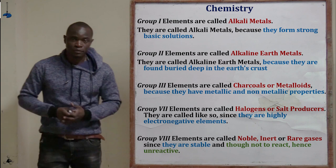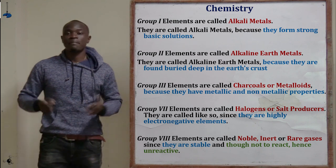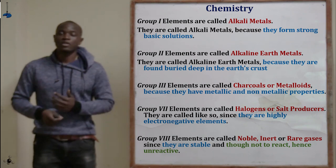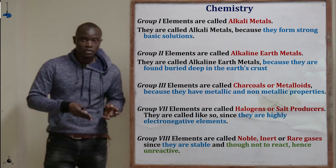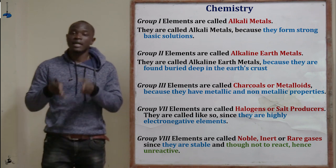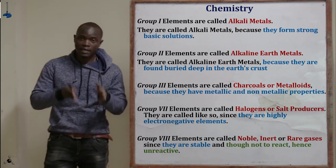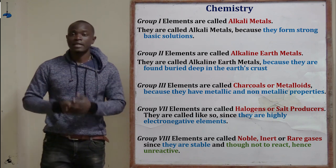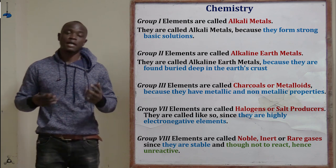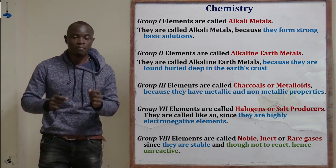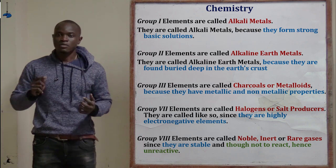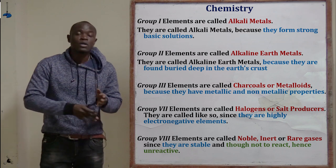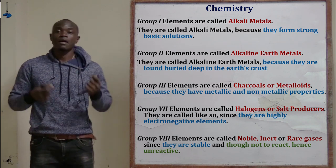Element K is in group 2. Group 2 elements are referred to as alkaline earth metals — not alkali earth metals. They are called alkaline earth metals because they are found buried deep inside the earth's crust.